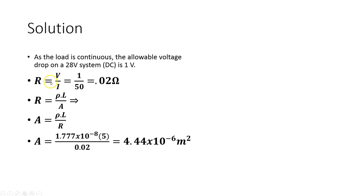So taking that I can determine the resistance of the wire. So 1V over the 50A which we were given in our problem allows the wire to have a resistance of 0.02 ohms.